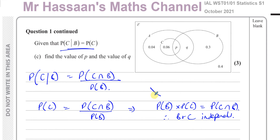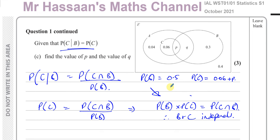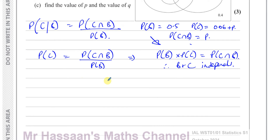If they're independent and probability of B is 0.5, and the probability of C in terms of P is 0.06 plus P — because C is this circle here — and the probability of C intersection B is just P, then I can set up an equation: 0.5 times 0.06 plus P equals P. So 0.03 plus 0.5P equals P.